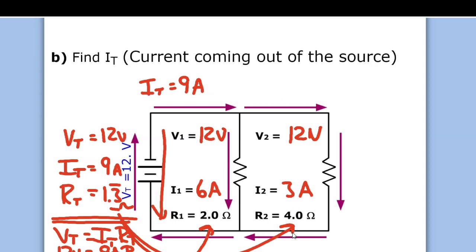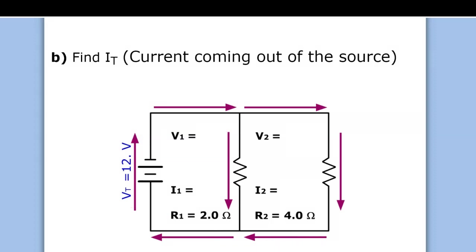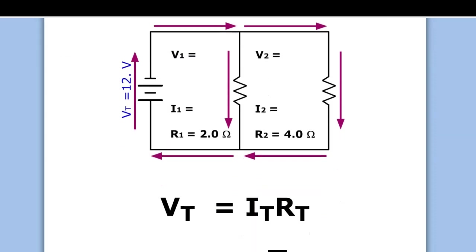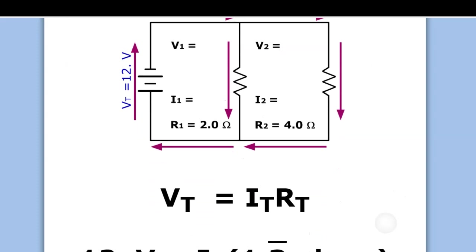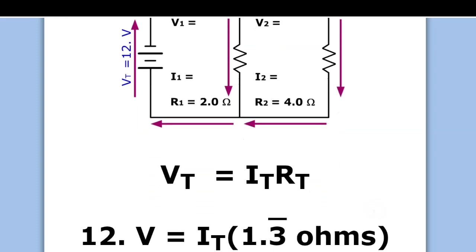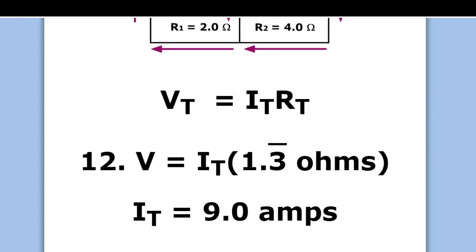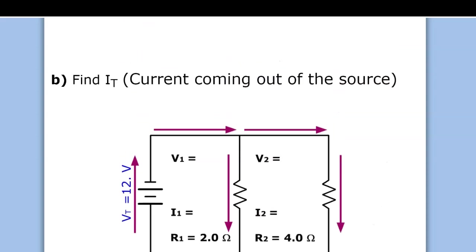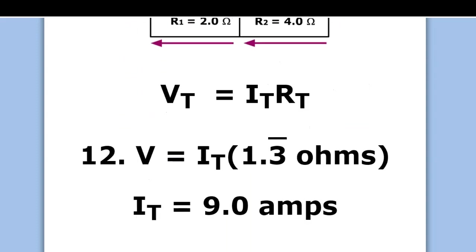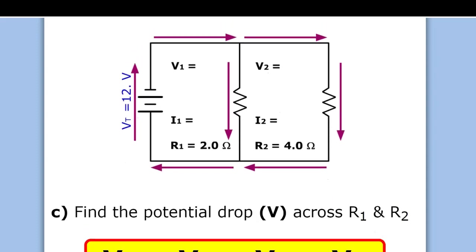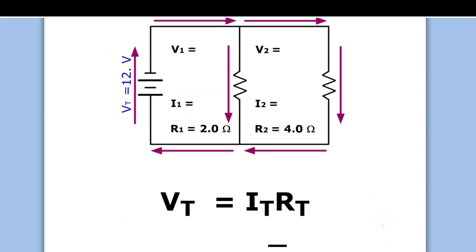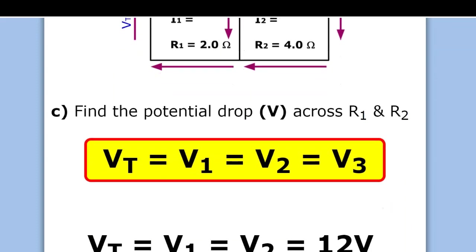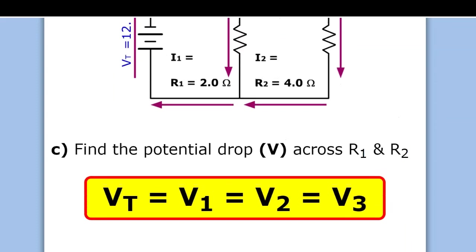For a parallel circuit, the total resistance is always smaller than the smallest resistance. Each clue gets you the next clue, so be patient with it. Now find the potential drops — we already did this because in a parallel circuit the voltage drops are equal to the source: 12 volts across each branch.